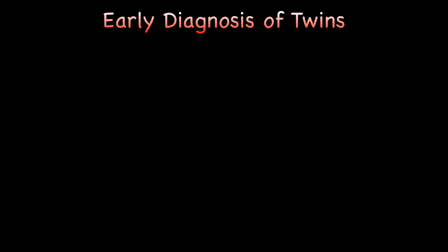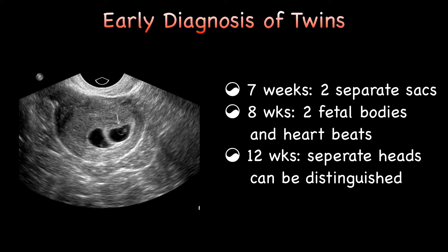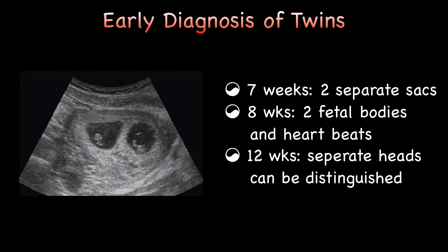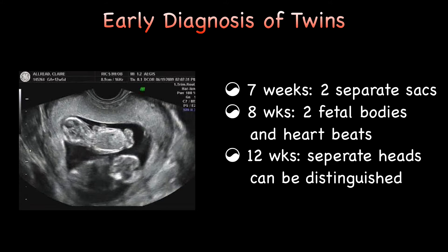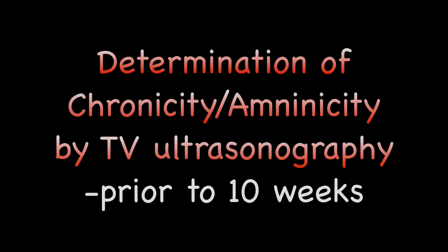Transvaginal sonography is essential for early diagnosis of twins. Twins can be suspected as early as 7 weeks when two separate gestational sacs are identified on transvaginal ultrasonography, but this needs further confirmation. It is prudent to wait until two separate embryos and heartbeats are visible to determine the number of fetuses. A repeat ultrasonography at 8 weeks will show separate fetal bodies. At 12 weeks, separate heads can be distinguished. If routine scanning is carried out at least at 16 weeks, twins should rarely be missed. The optimal time for determining chorionicity and amnionicity using transvaginal ultrasound is between 6 to 10 weeks.